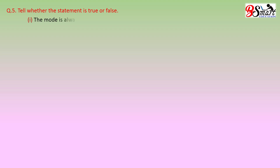Question Number 5. Tell whether the statement is true or false. First: the mode is always one of the numbers in a data. Solution: the statement is true, because mode is the number which is repeating the maximum number of times in the given data.